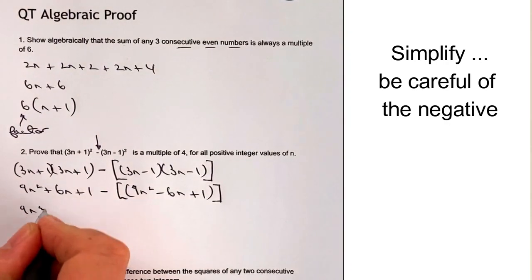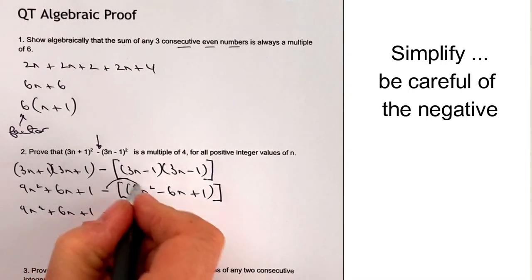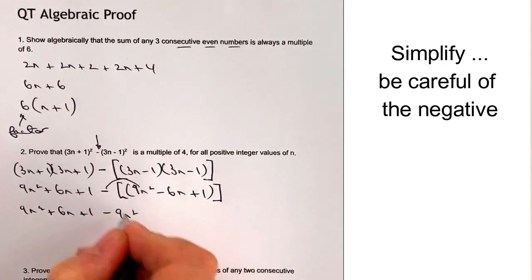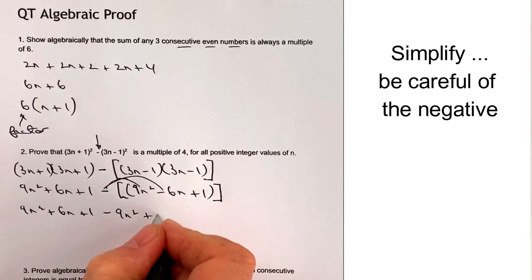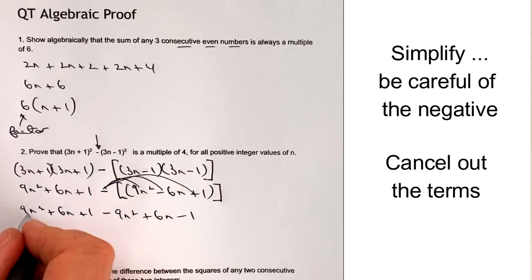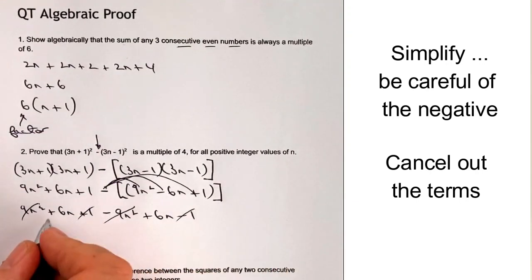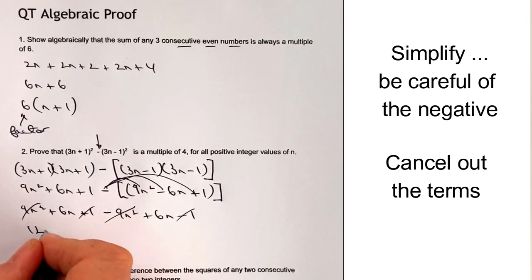We've got 9n squared plus 6n plus 1 minus. So we've got minus 9n squared plus 6n minus 1. Okay, which means that and that cancel, that and that cancel, and I get left with 12n.